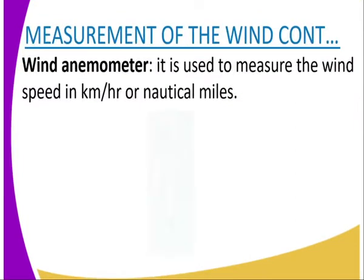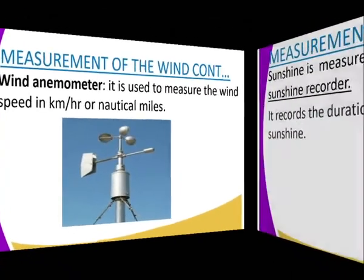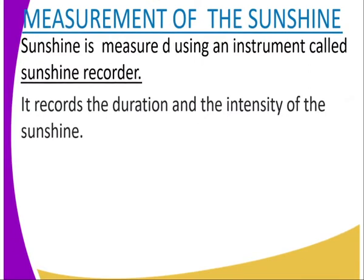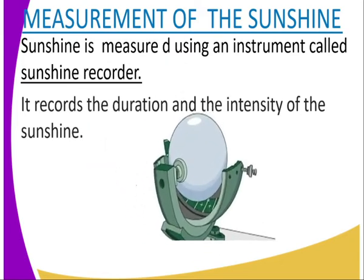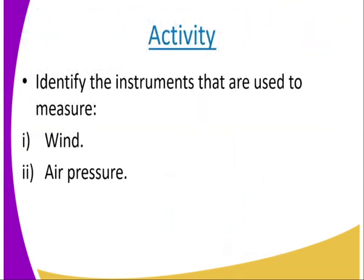We also have the wind anemometer, which is used to measure the wind speed in kilometers per hour. Then we have the sunshine recorder — the instrument used to measure sunshine. It records the duration and intensity of the sun. It has a card demarcated into months; one section of the card is burnt for each hour of sunshine, allowing you to count how many hours of sunshine an area experiences.